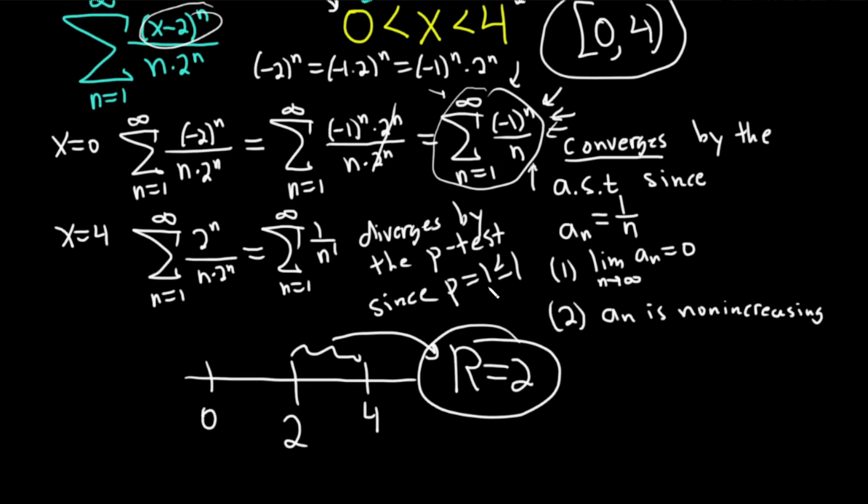Remember, the p-test says that it diverges if p is less than or equal to 1 and it converges if p is bigger than 1. So in this case, it diverged. Hopefully you've learned some math in this video and hopefully you've enjoyed it. If you enjoyed this video, make sure to check out more videos on Chegg. Until next time, good luck and take care.